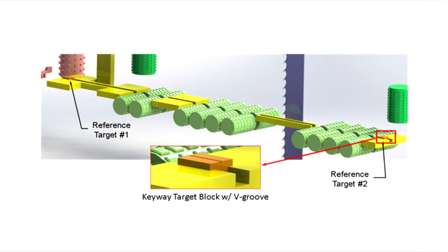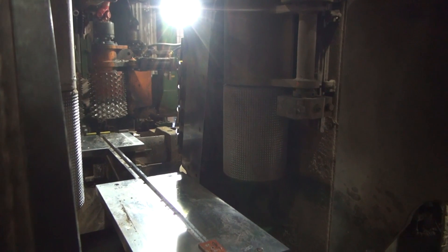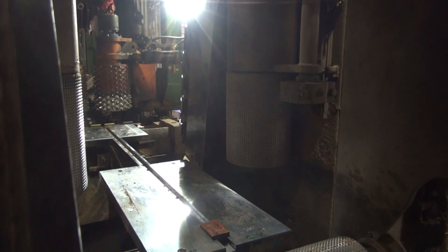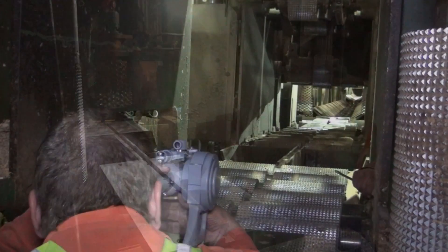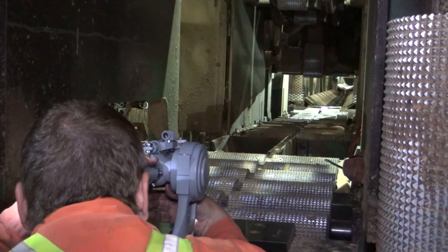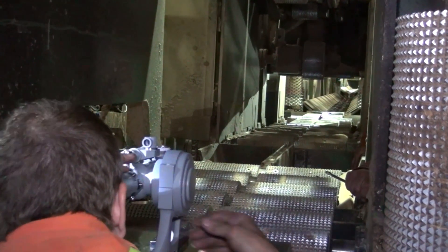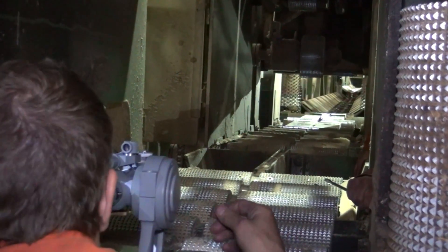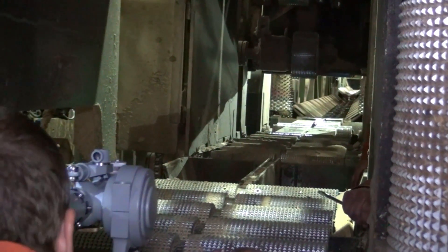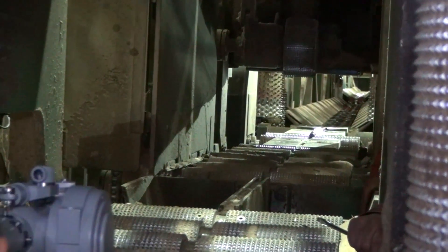A point is selected at each end of the keyway to align the jig transit to the machine center. A target block seats into the keyway and defines the actual centerline. It consists of a notched aluminum block provided by the original equipment manufacturer for the specific purpose of alignment. In the actual chipping saw, we see the operator sighting and aligning the instrument to the far target block mounted in the keyway.